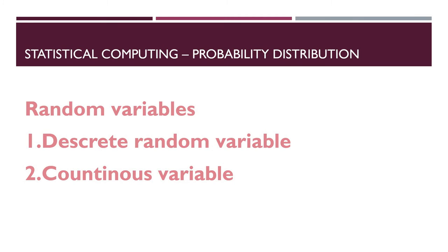Discrete random variables and continuous random variables. To explain the difference, consider this example: you have purchased a new wristwatch and inserted a new battery. You are interested in two questions — how long will it be before the first battery needs replacement, and how many batteries will have to be replaced during one year period.